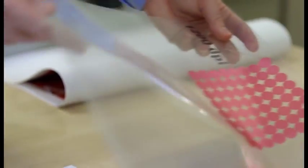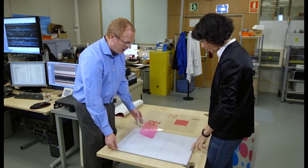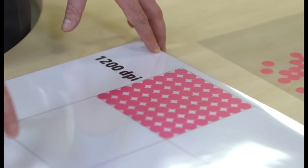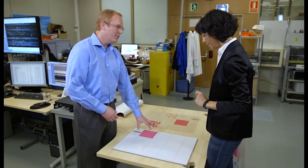So a thermal inkjet printhead, in this case, can achieve 1,200 drops per inch. This looks something like this. So we are placing much more drops, right? Correct. We have up to 64 drops in the same space as one piezo drop, and we can do it in a single pass.